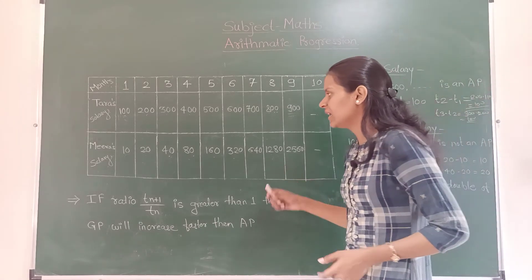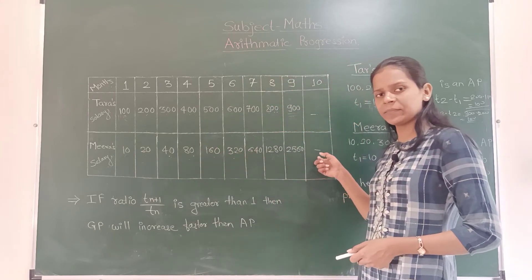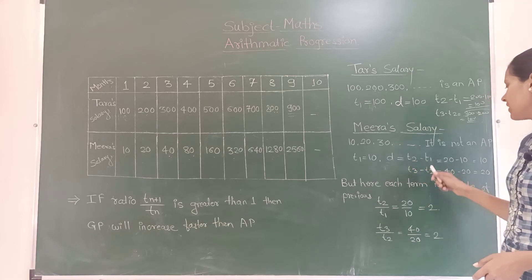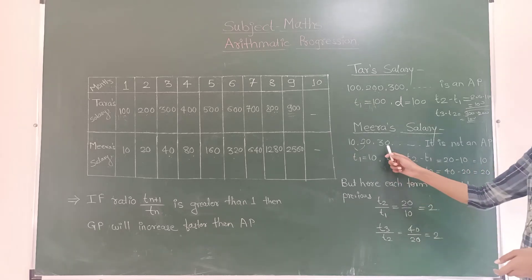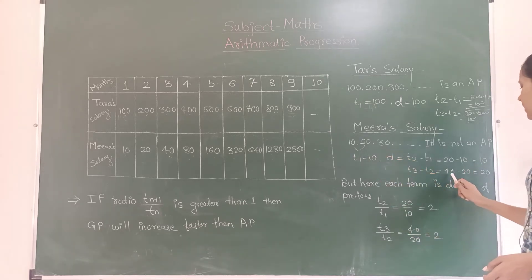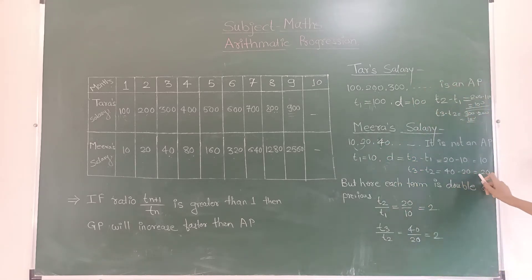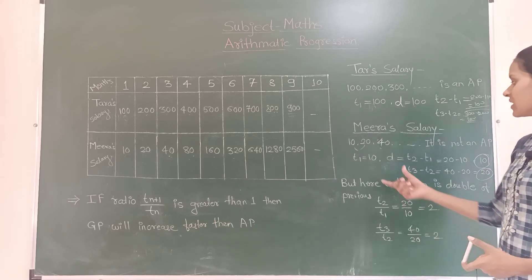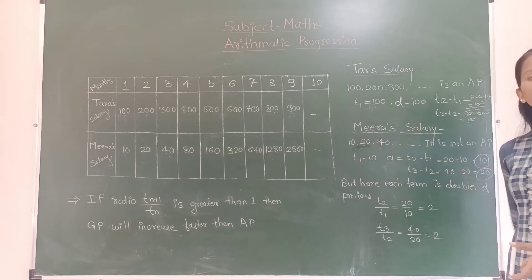Now look at Meera's salary. Let's check if it is an arithmetic progression. T2 minus T1 equals 20 minus 10, which is 10. T3 minus T2 equals 40 minus 20, which is 20. The common difference is not constant, so Meera's salary is not an arithmetic progression.